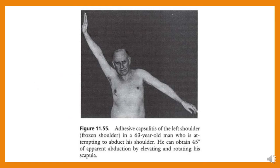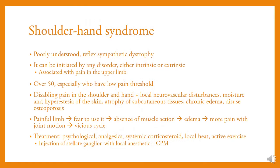Shoulder-hand syndrome is a poorly understood condition reflecting sympathetic dystrophy. It can be initiated by any disorder, either intrinsic or extrinsic, especially in persons over 50 with a low pain threshold. It causes disabling pain in the shoulder and hand with local neurovascular disturbances, moisture, trophic changes of the skin, atrophy of subcutaneous tissues, edema, disuse osteoporosis, and a painful limb with fear to use it. Absent muscle action, edema, and more pain with joint motion create a vicious cycle. Treatment includes psychological support, analgesics, systemic corticosteroids, local heat, and active exercise.